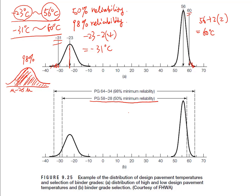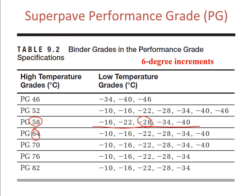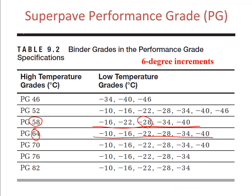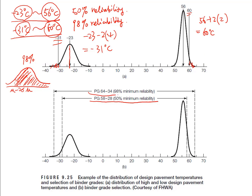Similarly, when choosing the binder for 98 percent minimum reliability, the design maximum closest to 60 but higher than 60 is 64. And the design minimum closest to negative 31 but lower than negative 31 is negative 34. So the binder for 98 percent minimum reliability should be PG 64 to negative 34.